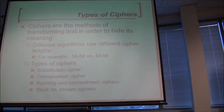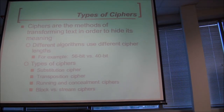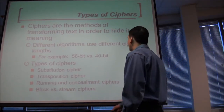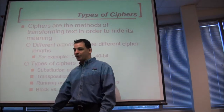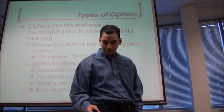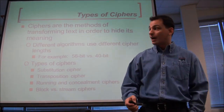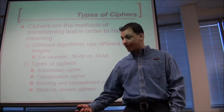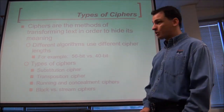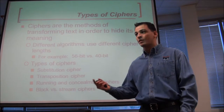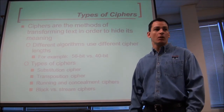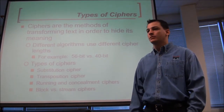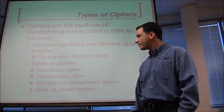Ciphers are the methods of actually transforming text in order to hide its meaning. Are we talking about confidentiality or integrity? You see the word hiding — that means confidentiality. You see the word transforming — that means moving stuff around, so it's been changed. If it's been changed, it can't be integrity.